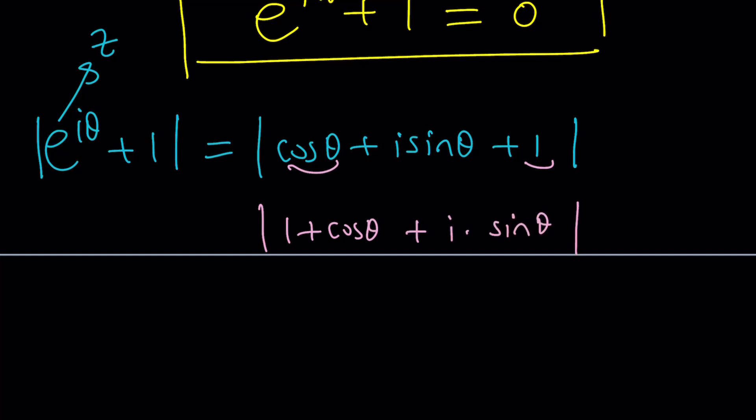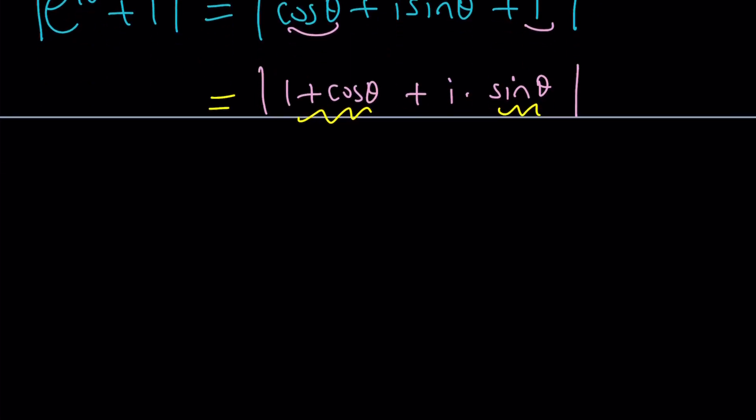So we can kind of separate the real and the imaginary parts. This is the real part. This is the imaginary part. And the absolute value is defined as follows. The square root of the real part squared plus the imaginary part squared. We're going to simplify this. And that's going to give you the answer.